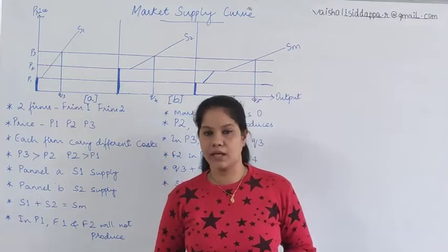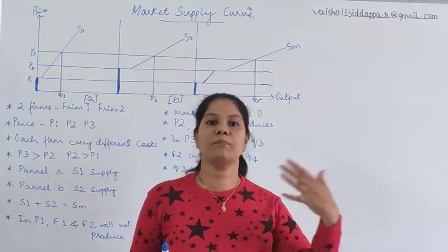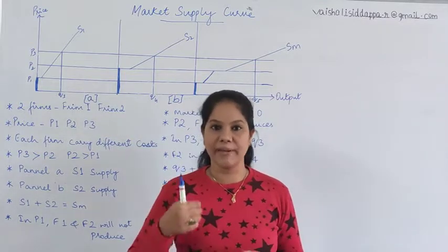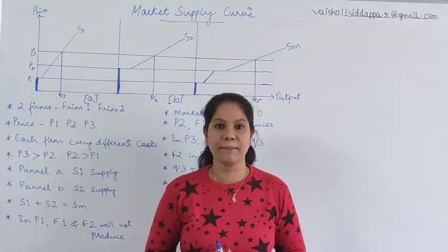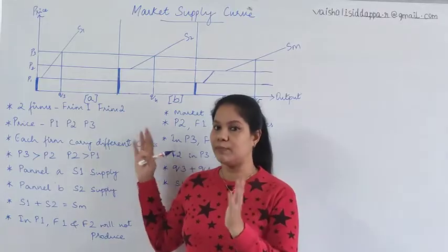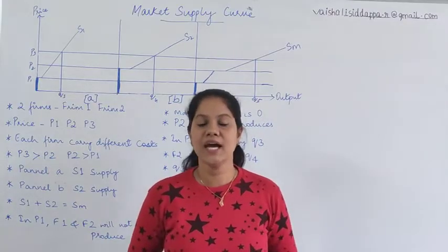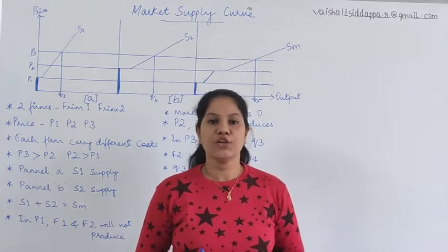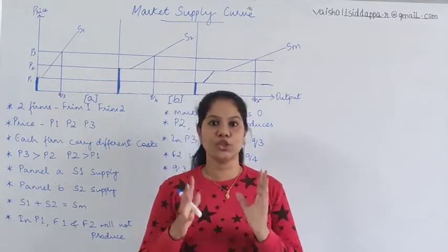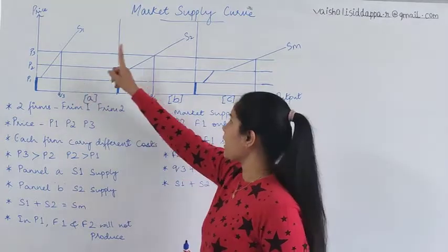For example, in any market this pen is produced and supplied by 100 people. In market supply, we calculate how many units all 100 suppliers have supplied combined. But for the syllabus, we can't consider 100 or even 50 sellers — the numbers get very large. So just to make it understandable, we have taken only two firms here: firm A and firm B.